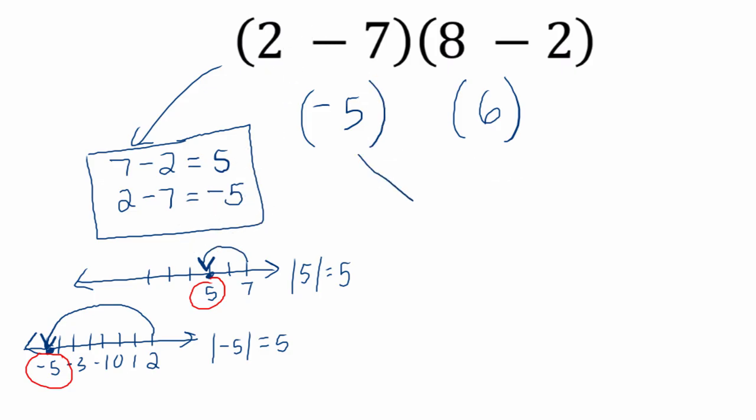Now we have negative 5 and 6. Well, I know 5 times 6 is 30, so negative 5 times 6 would be the opposite, negative 30.